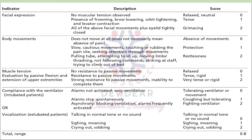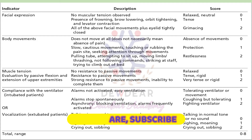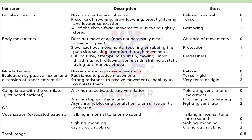These are the four indicators — facial expression, body movements, muscle tension, and compliance with the ventilator or vocalization. The patient's behavior in each domain is scored between 0 and 2, giving a total score ranging from 0, indicating no pain, to 8, which is the maximum pain.